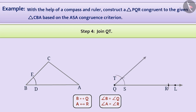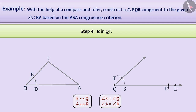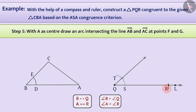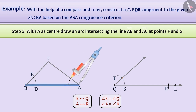Can you tell me how we will construct angle R? Pause the video and think about it. Let's understand this. In step 5, to construct angle R, with A as centre, we will draw an arc intersecting the line AB and AC at points F and G.